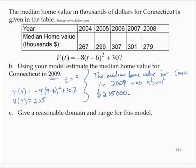Give a reasonable domain and range for this model. Well, we know our data points are good and our model fits the data points well. We don't want to go too far outside the data points. So the domain, I would say let's go no further than 1 to either side of the data. So I would go from 3 to 9 for the domain.